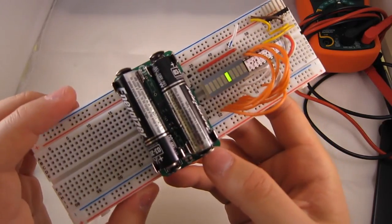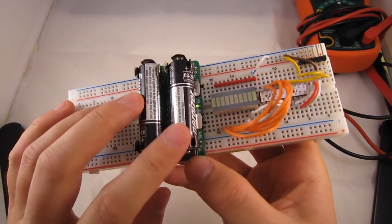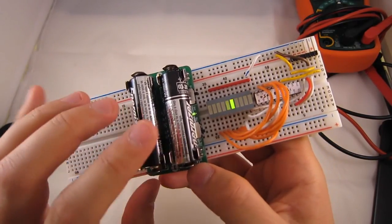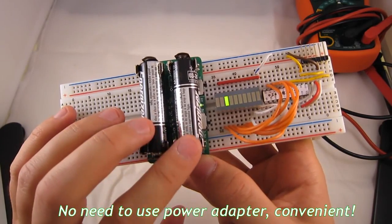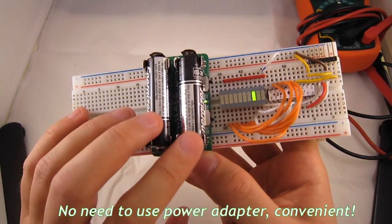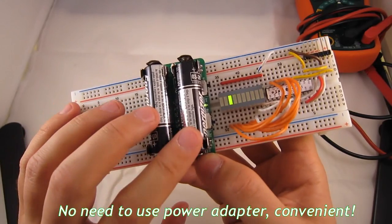So there are some nice advantages of using the AA Saver kit as a breadboard power supply. First of all, it runs from two AA batteries. So you don't need to plug this into a power supply. And I find this really convenient.